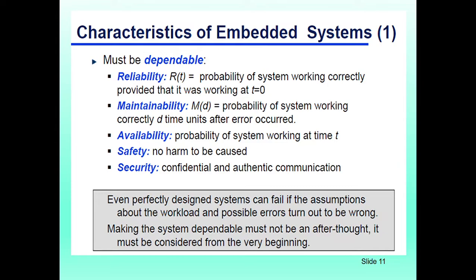Here are some characteristics of embedded systems. The embedded system must be dependable — dependability includes reliability, maintainability, availability, safety, and security. Reliability is the probability of the system working correctly given that it was working at time t=0. Maintainability is the probability of the system working correctly a certain time after an error occurred. Availability is the probability of the system working at any time t. Safety means there should be no harm caused, and security means confidential and authentic communication.